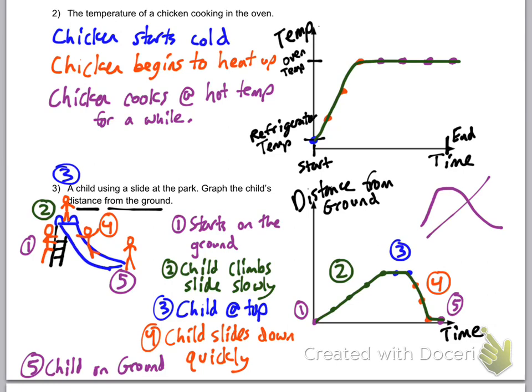So I want to cross that one out. It does not look like the shape of the slide. Instead, I considered carefully, this is a slow increase and that is a fast decrease.